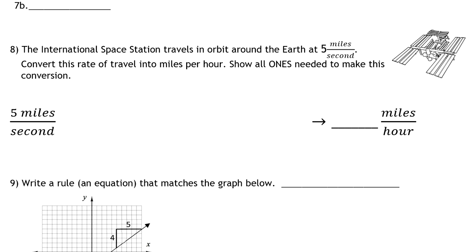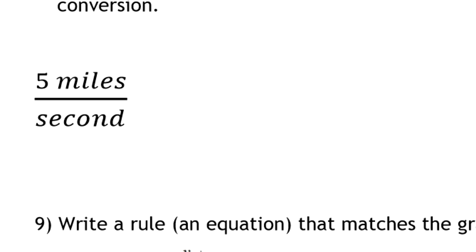I'm starting at 5 miles per second. My goal is to leave the miles in the numerator but to get the denominator to be hours instead of seconds. I'm going to make that conversion in a few jumps.